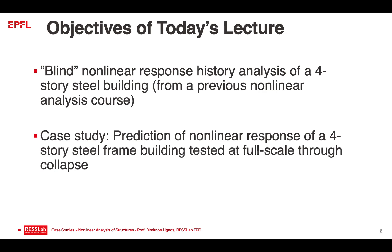They had to predict what the structure would do under a given ground motion. The second case study is a real blind analysis contest of an experiment that took place in Japan about 12 years ago, where people tested the behavior of a full-scale four-story building that was tested to collapse. This is a real blind analysis contest because it was a real building, a code-compliant building, and a lot of people internationally participated. You will also see a collective summary of the competition with additional information on what you should be doing to predict the behavior of this structure and trace its response through collapse.